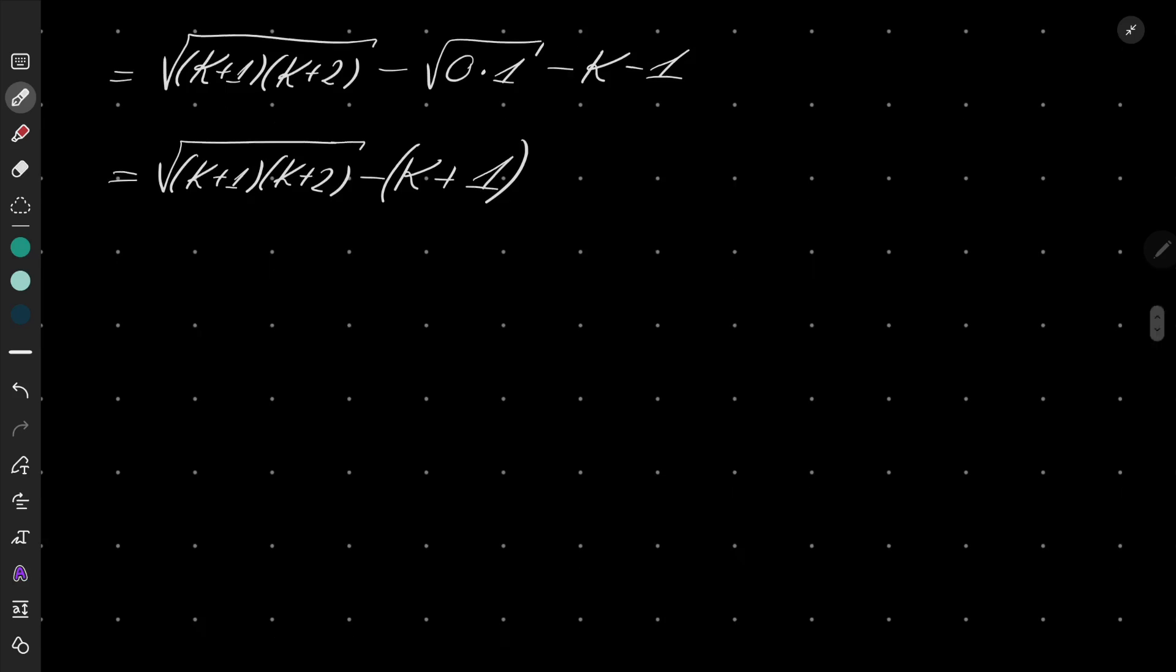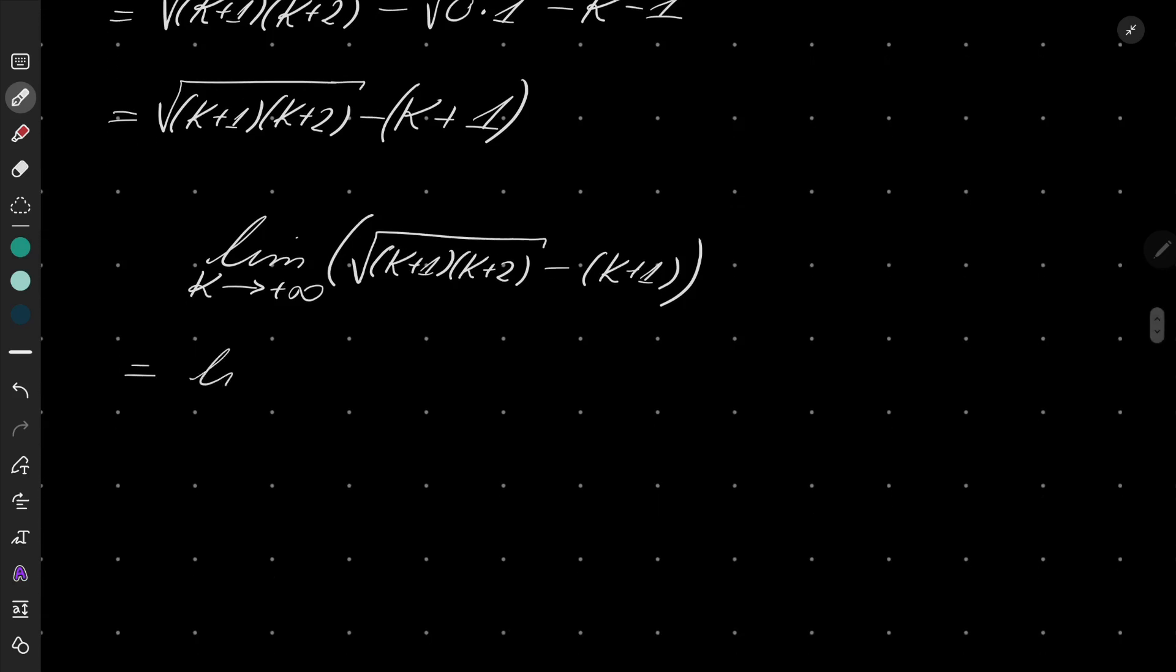So let's now find limit as capital K goes to infinity of square root of (K+1)(K+2) minus k plus 1. And then we have infinity minus infinity, which is a problem. Classical trick, when we have a difference of square roots, we can do the following.